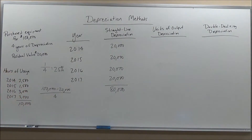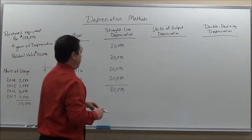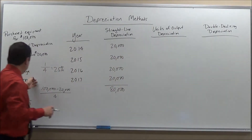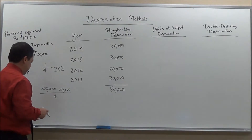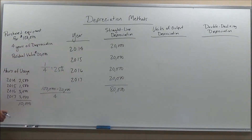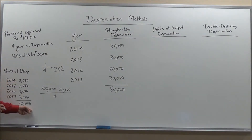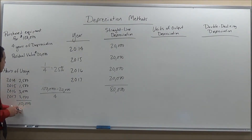Now let's compute the units of output depreciation. As you can see, there are different amounts for each year: we start with 2,500 hours, then 1,500, then 3,000, and 3,000 in the last two years. We want to figure out how much that is per unit. We have a total of 10,000 hours of depreciation.